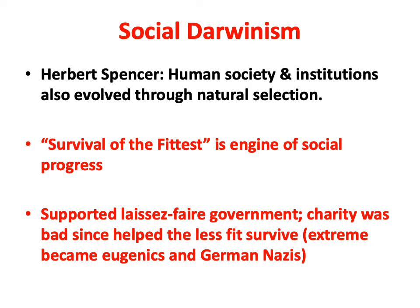Social Darwinism — Herbert Spencer, a well-known sociologist at the time, said that Darwinian evolution also works its way through human society and institutions, and the process is natural selection or survival of the fittest. That's the engine of social progress. This justified the great disparities in wealth in the United States, and a logical conclusion was to support minimum government interference — so-called laissez-faire government. At the same time, charity was considered bad since it helped the less fit to survive. A very extreme application of social Darwinism is the eugenics movement, culminating in the German Nazi movement.